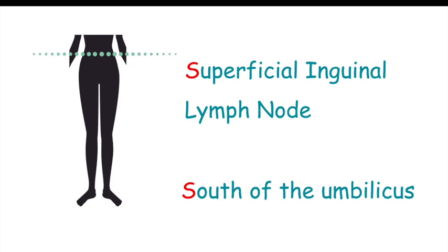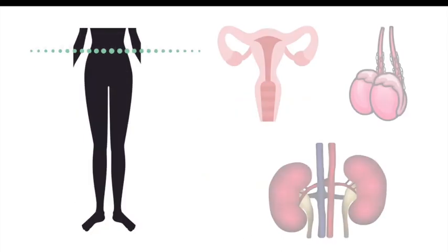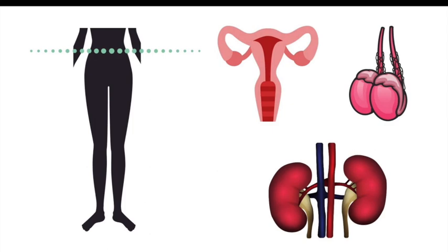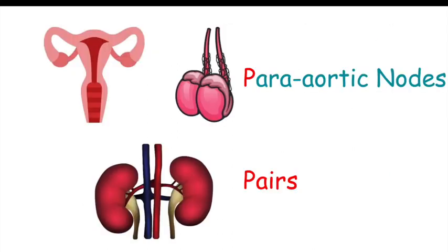The first exception is the gonads, which drain into the para-aortic lymph nodes. We can remember this because the P in para-aortic drains the pair — the pair of ovaries, the pair of testes, and the pair of kidneys all drain into the para-aortic nodes.